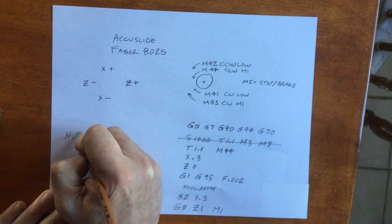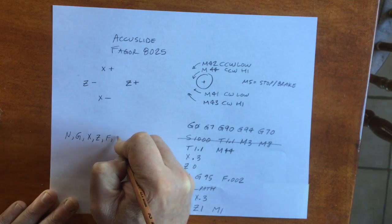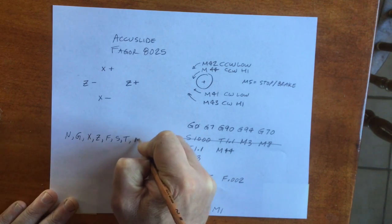I always add M1 for the optional stop. The FAGOR command line only accepts commands in the following order: N, G, X, Z, F, S, T, and M.